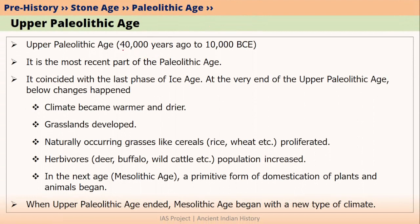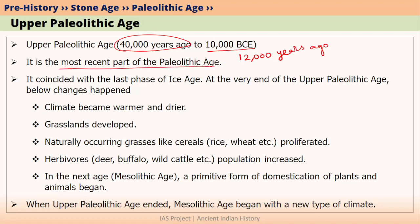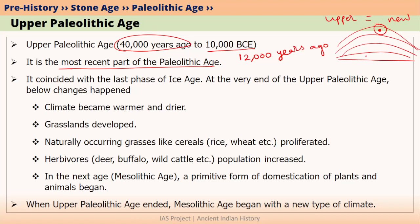Upper Paleolithic Age was roughly from 40,000 years ago to 10,000 BCE, meaning it is the most recent part of the Paleolithic Age. You can remember this using the trick of a Mound: upper layers contain newer archaeological remains, so upper means new; lower layers contain older remains, so lower means old. Lower Paleolithic Age is the oldest and Upper Paleolithic Age is the newest.